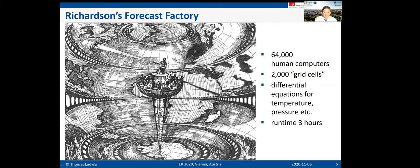He divided the Earth's surface into 2,000 grid cells, and for each grid cell he assigned 32 humans to compute the differential equations for temperature, pressure, and related quantities — sitting on balconies. He thought 32 people could complete the mathematical analysis within three hours to predict the weather for the next three hours. There was a pole in the middle of this globe, with people sending red and blue light signals to control load balancing between the individual human computers.